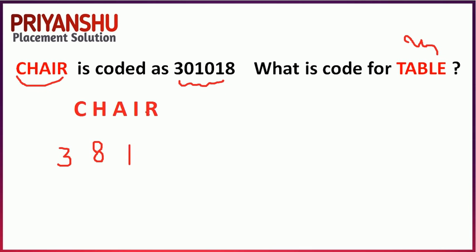R is the 18th letter, so its value is 18. So CHAIR gives us: C=3, then 0, then 1 (A), then 8 (H), then 18 (R), then 1. The zeros are placed at alternate positions. Our code checks out as 100% correct.